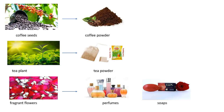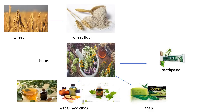We get coffee powder from coffee seeds, tea powder from tea plant, and make perfumes and soaps from fragrant flowers. Wheat flour is made from wheat. We also make herbal products like toothpaste, medicines and soaps from herbal plants.